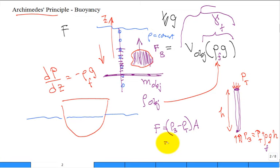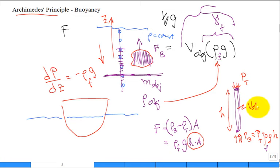The net upward force from the fluid acting on the top and bottom is: (pressure_bottom − pressure_top) × cross-sectional area. Substituting gives ρ_fluid × g × H × area. H × area is the volume of the submerged object. If you do it for one little cylinder and then combine a bunch of cylinders to make up the object, you have derived Archimedes' Principle — the buoyancy force equals the weight of the fluid displaced.